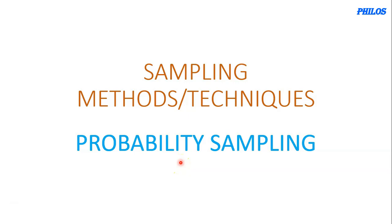Welcome. In today's tutorial we're going to look at sampling methods. It is important to know that we have two sampling methods: the first is the probability sampling method and the second is the non-probability sampling method. The probability sampling method is also known as the random sampling method, and the non-probability sampling method is also known as the non-random sampling method. This tutorial is only going to focus on the probability sampling method.